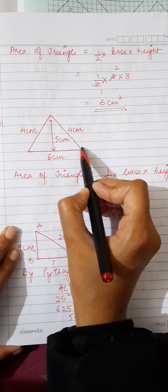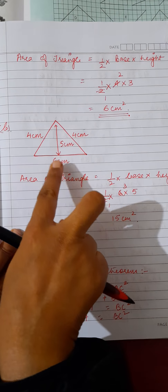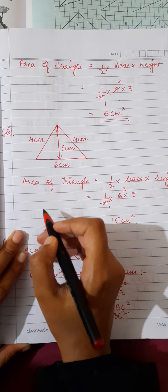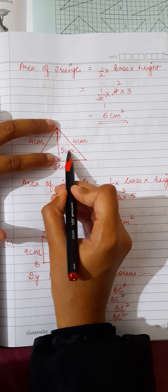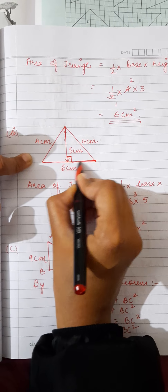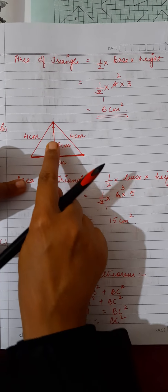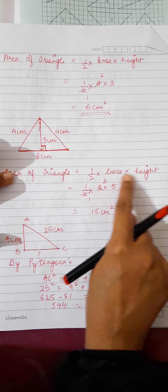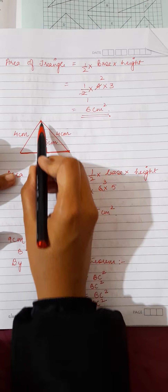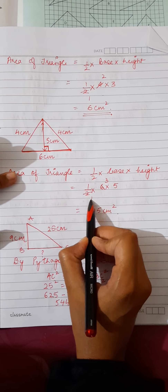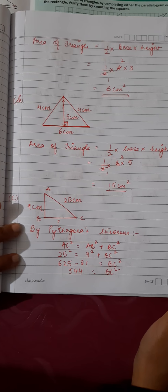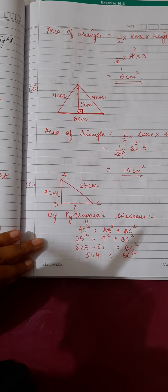Now let us do part B. In this triangle the sides and the height are already given. The height is 5 centimeters, making a 90-degree angle with the base. Area = half into base into height: half × 6 × 5 = 15. The answer is 15 centimeters square.